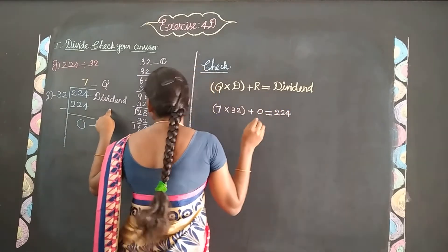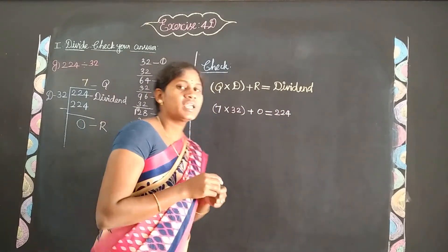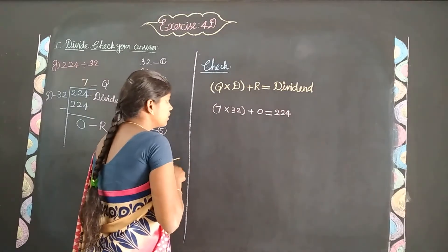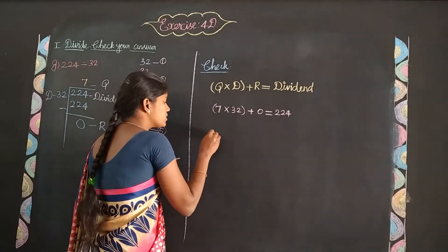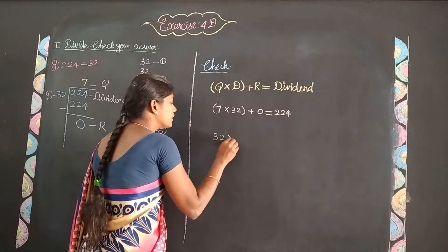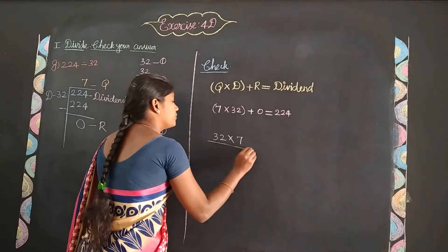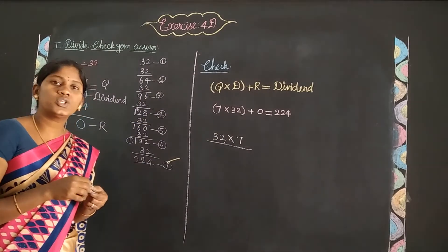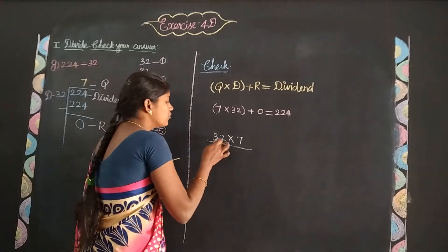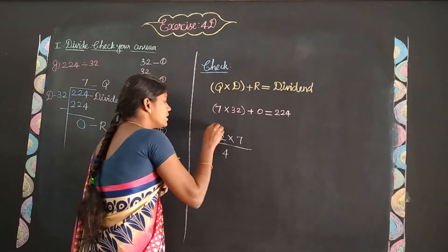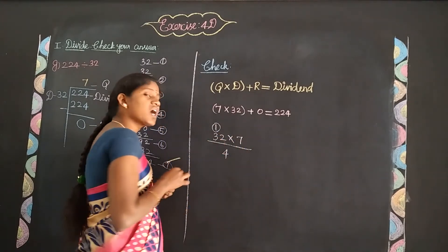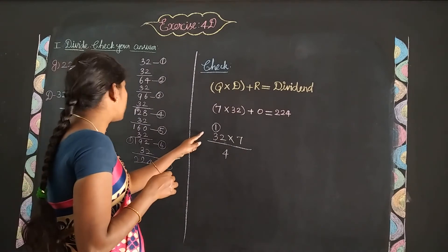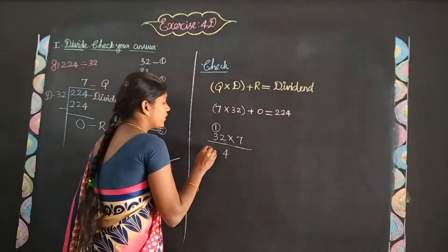Now let's multiply 32 times 7. 7 times 2 is 14, write 4 and carry 1. 7 times 3 is 21, plus 1 equals 22. So we get 224.